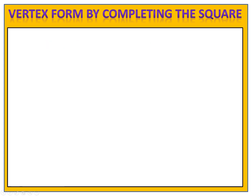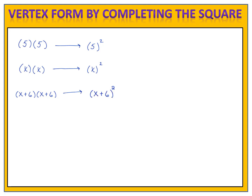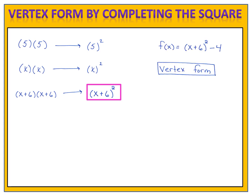Before we begin talking about how to complete the square, there are two things we have to talk about. The first thing is about exponents. We know that 5 times 5 can be written as 5 squared, and x times x can be written as x squared. Similarly, x plus 6 times x plus 6 can be written as x plus 6 squared. This is particularly important because when we have a function written in vertex form, we have a binomial squared.